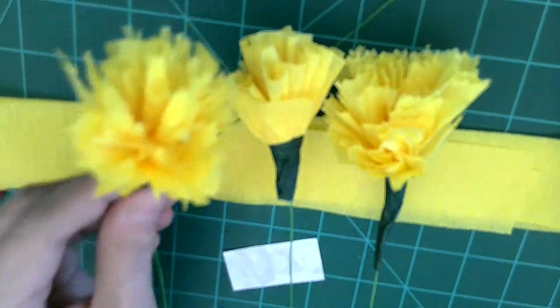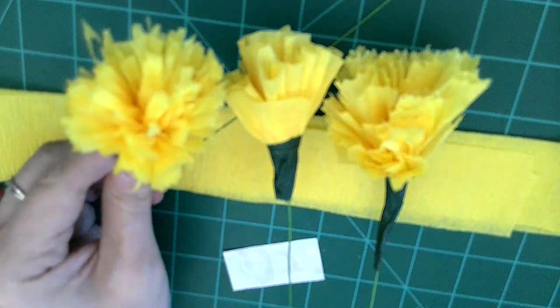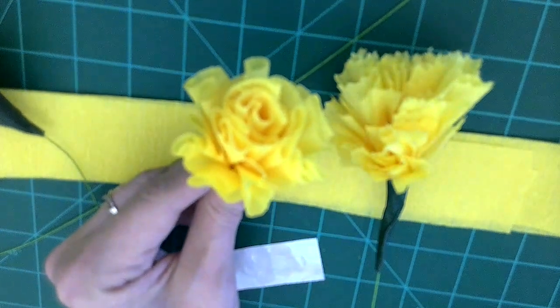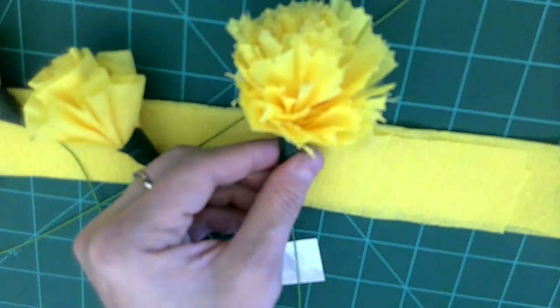First is a Spider Mum. This one you can tell has some long, thin petals. The second one is a rose-like flower. And the third one is a Carnation.